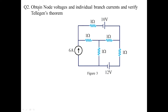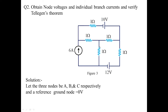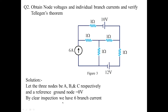Now this is an interesting problem. We have to find out node voltages and individual branch currents, and verify Telegan's theorem for the circuit shown in figure 3. We start the solution by identifying nodes A, B, C, and reference node 0. By inspection we can see there are 6 branch currents: branches 1, 2, 3, 4, 5, and 6.